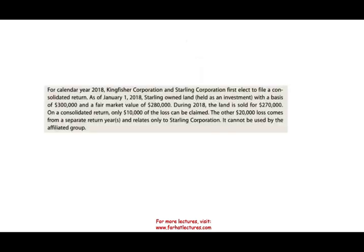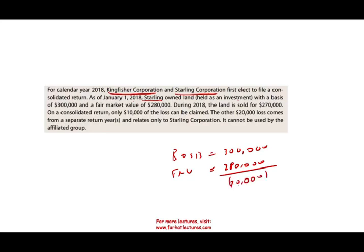For calendar year 2018, K Corporation and S Corporation first elected to file a consolidated return. As of January 1st, Starling owned land held as an investment with a basis of $300,000 and a fair market value of $280,000 — so there is an unrealized loss of $20,000. During 2018, the land is sold for $270,000. On a consolidated return, you can only take a $10,000 loss, because when they started to consolidate the value was $280,000 — you compare $270,000 to $280,000, not to $300,000. The other $20,000 loss comes from a separate return year related to Starling and cannot be used by the affiliated group. When the asset is sold to an outside party, then we can take those losses.